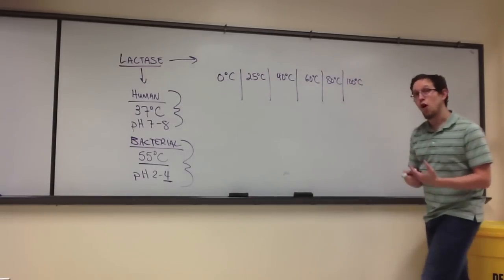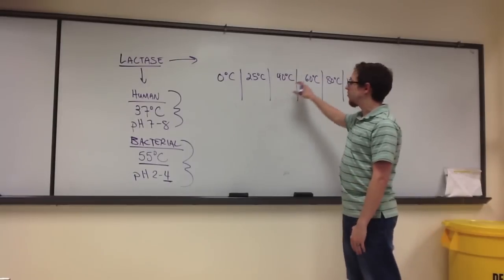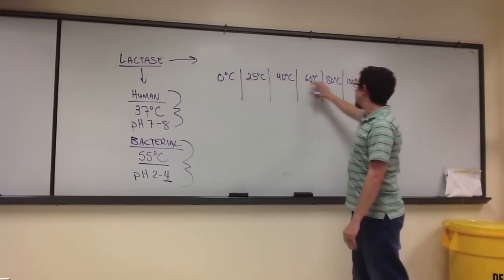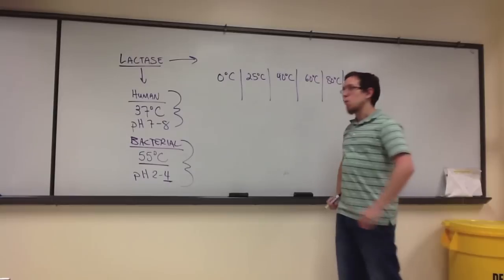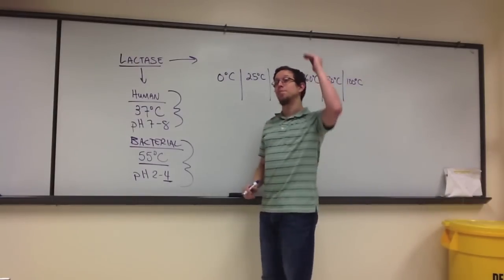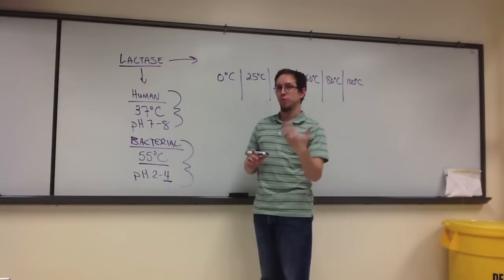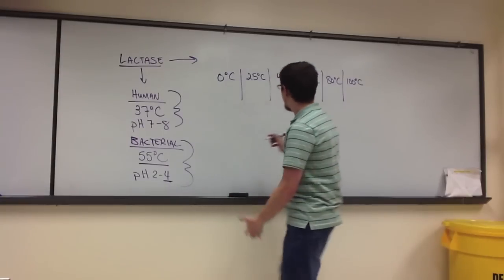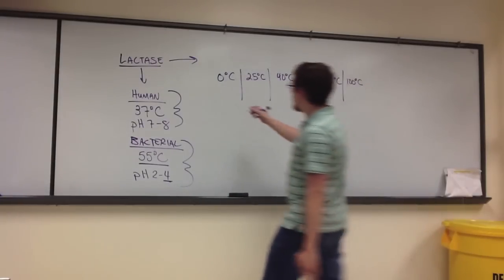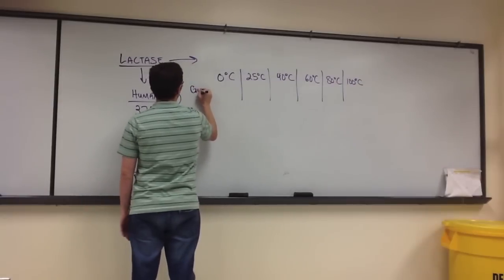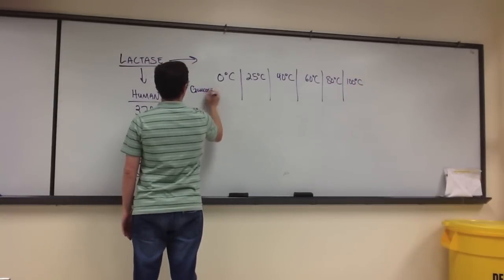Now, what we're hoping to see here is a definitive point amongst all of these temperatures, where the enzymatic activity is higher than at any of the other points. That tells us what our optimal temperature is. How are we measuring that? Well, remember, we're measuring the amount of glucose produced.